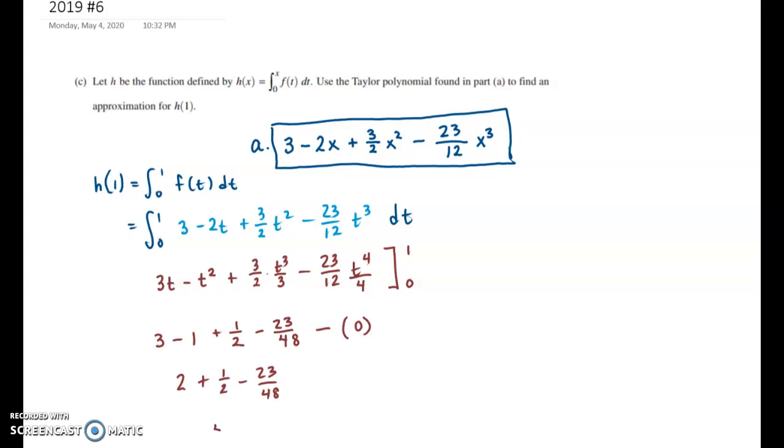If I turn that into 48, that would be 5 times 24. 120 minus 23 over 48. So that'd be 97 over 48. There you go. I did the fractions.